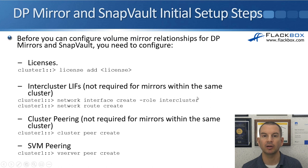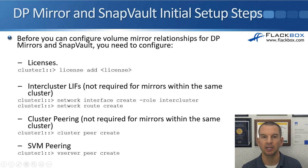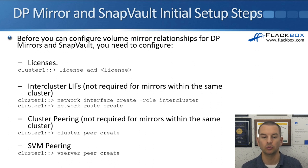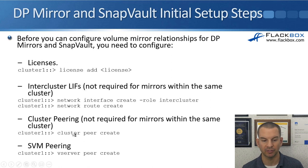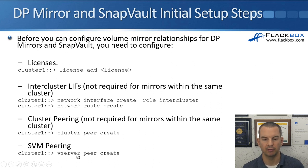Next up, you need to do the cluster and the SVM peering. The peering is for when the replication is going between the two different clusters. To peer the clusters, you use 'cluster peer create', and then to peer the SVMs, you use 'vserver peer create'.